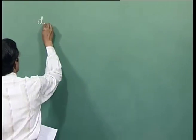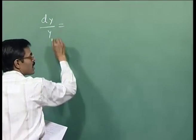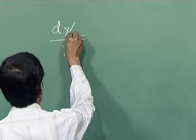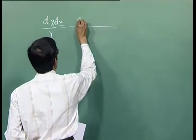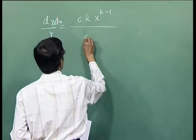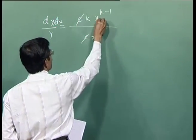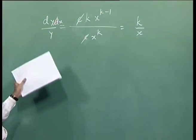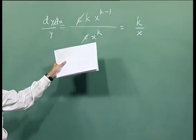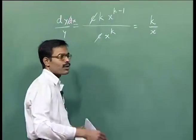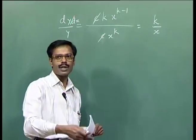You find dy/dx divided by y gives k/x. So c gets cancelled and most of the powers of x also get cancelled, giving k/x. From here, one of the parameters c has been eliminated, but the other parameter k remains. As many parameters you want to remove, that many times you need to differentiate.